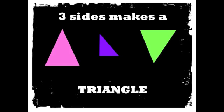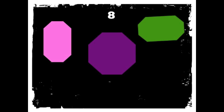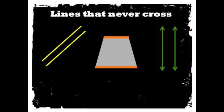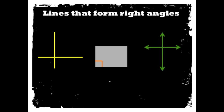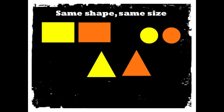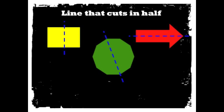Break down the geometry: three sides makes a triangle, four sides quadrilateral, five pentagon, six hexagon, eight octagon, ten decagon. Lines that never cross are parallel. Lines that meet or cross are intersecting. Lines that form right angles are perpendicular. Same shape, same size: congruent. Line that cuts in half: symmetry.